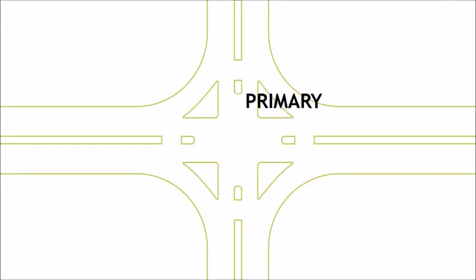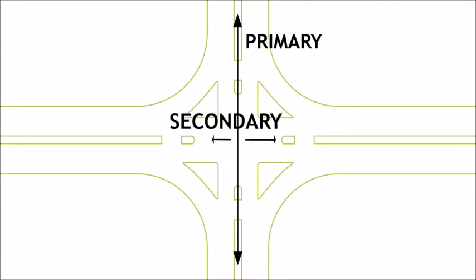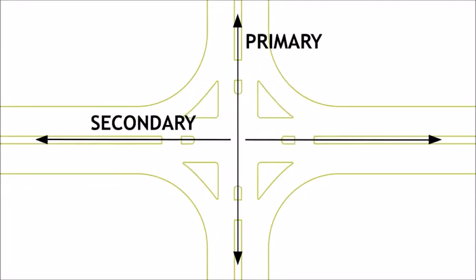Every intersection is composed of a primary state highway and the secondary crossing route. If the intersection is two state highways, the primary is the lower numbered route of the two.